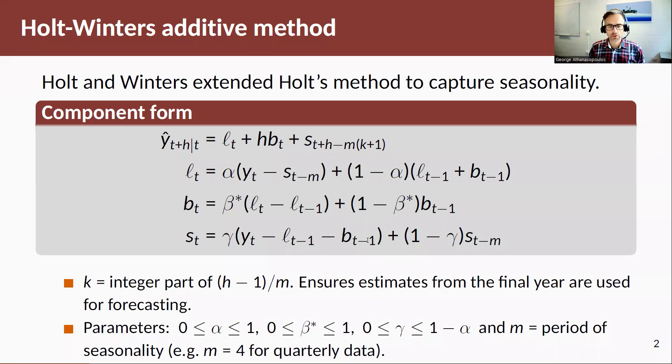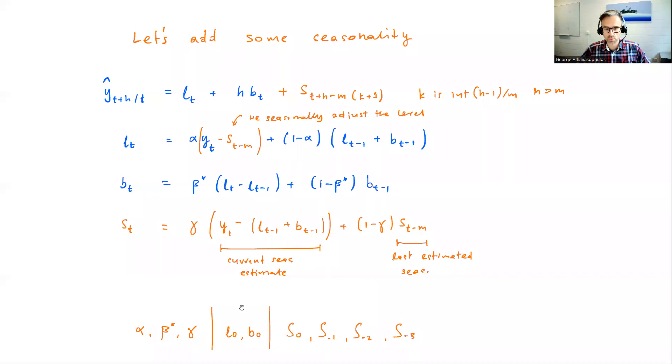Okay. So here's the official slide, which repeats what I just said before. So we have the forecast equation with the three smoothing equations. Again, this K integer is, this K is the integer part of H minus 1 divided by M. We saw this in the seasonal naive forecast method, which you saw in earlier sections of the book. Now the parameter restrictions or the bound restrictions for the smoothing parameters as before alpha and beta are between 0 and 1, but now gamma is between 0 and 1 minus alpha. And M again depicts, as we have throughout the book, the period of the seasonality for quarterly data M is equal to 4, and that's what we base this example on.